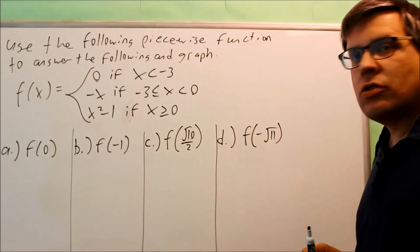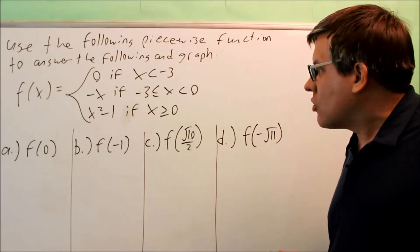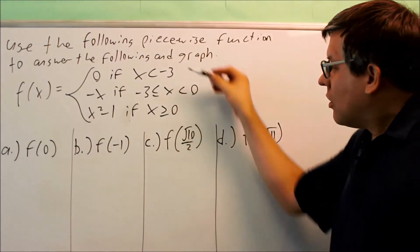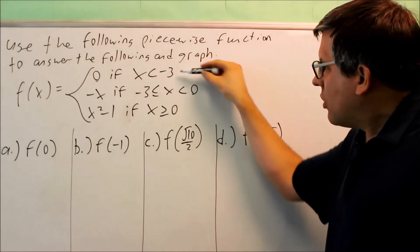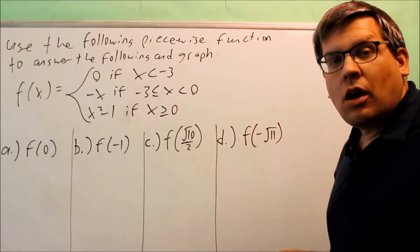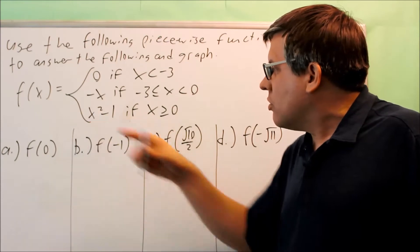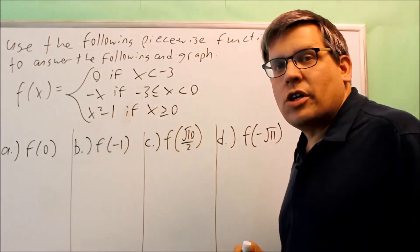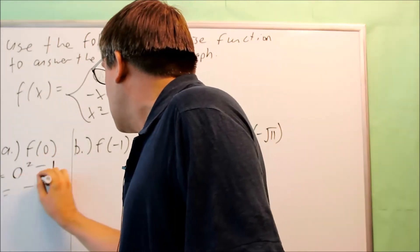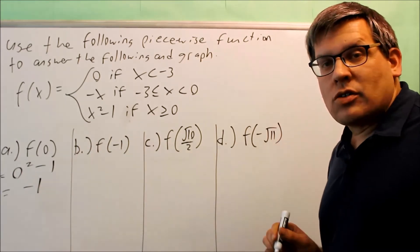We have four parts to evaluate. The first asks us to find f of zero. You have to figure out which conditional statement includes zero. The first two don't include it, but the third one does because it has the equal sign with zero. So we put zero into x squared minus one: zero squared minus one gives negative one. When x is zero, you get negative one.